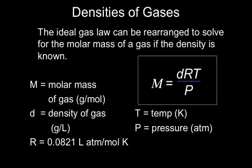M stands for the molar mass of a gas in grams per mole. d stands for density of a gas in grams per liter. R is still 0.0821 liter atmospheres per mole K. Temperature still has to be in Kelvin, and P is still pressure and has to be in atm because that R value is in there.